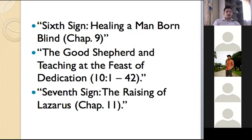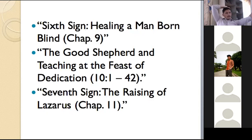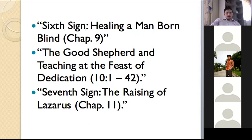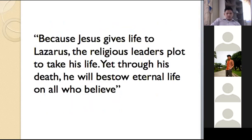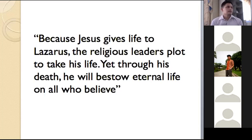The raising of Lazarus is the climax of the greatest of the seven gospel signs. It serves as a preview of the ultimate sign of Jesus Christ's resurrection. It also carries forward the plot by prompting the religious leaders to plot against him — because Jesus gave life to Lazarus, the religious leaders plotted to take his life. The irony: Christ giving life to Lazarus, while the religious leaders planned to take his life. Through his death, he will bestow eternal life on all who believe.